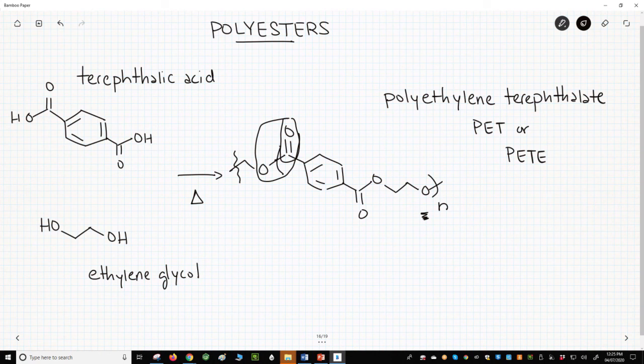So that's the story of polyesters. They are formed from the reaction of a diacid and a dialcohol. By far, the most common polyester is made from the reaction of terephthalic acid and ethylene glycol and is called polyethylene terephthalate.